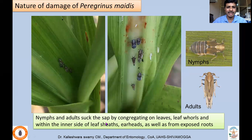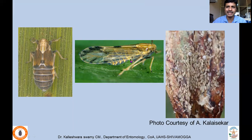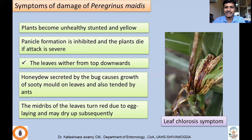The nature of damage includes both nymphs and adults sucking sap by congregating on leaves, leaf purls, the inner side of leaf sheath, the iris, and the exposed roots. Almost all plant parts are attacked. Similar to Nilaparvata lugens in paddy, both brachypterous and macropterous forms are found. Large numbers of nymphs congregate on different plant parts. Plants become unhealthy; growth is stunted, they turn yellow, panicle formation is inhibited, and leaves wither from tip downwards, giving the plant a sickly appearance.